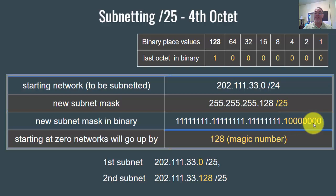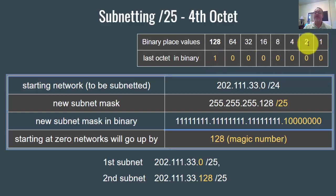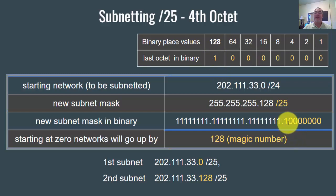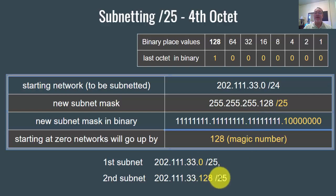If we take these last eight bits in the fourth octet and put them in our binary place values — two to the zero through two to the seventh power — you've got a one right here, and this one is in the 128th place. What that means is that when you AND an IP address with the subnet mask, the network returned is either going to be a zero network or the 128 network.